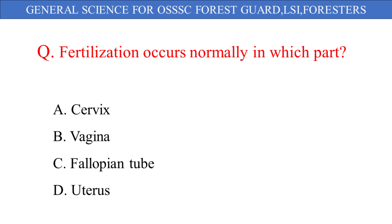Fertilization occurs normally in the: A. Cervix, B. Vagina, C. Fallopian tube, D. Uterus. And the correct answer is option C: Fallopian tube.